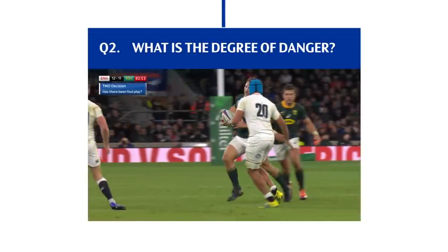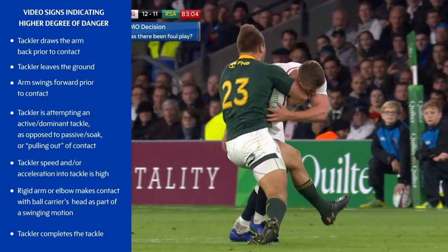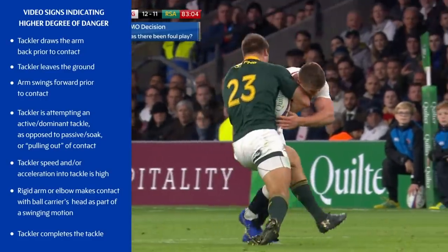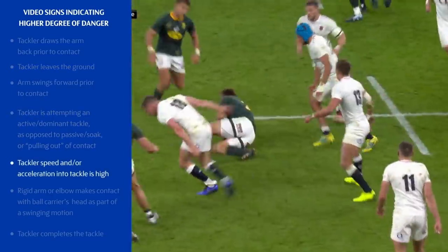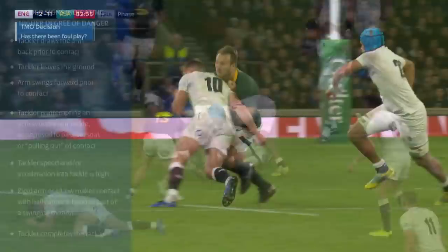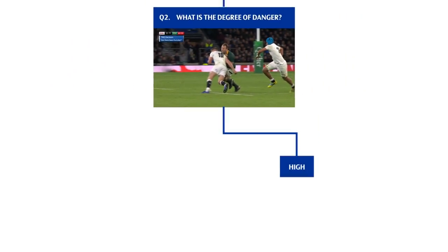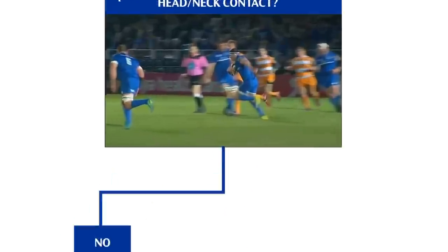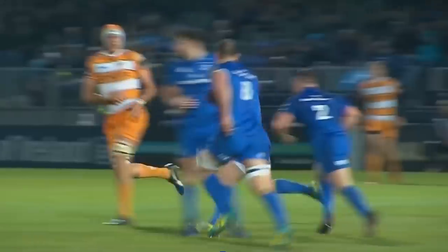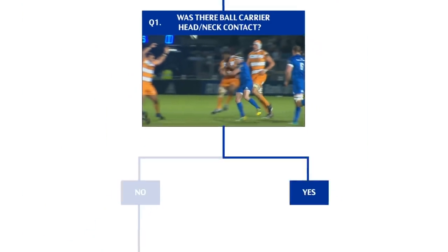Next, the officials must determine the degree of danger. In this example, there is a high degree of danger indicated by the tackler leaving the ground, a dominant tackle attempt, and both players at high speed. A high degree of danger without head or neck contact means the initial decision would be a yellow card. If the officials decide the degree of danger is low, the initial decision would be a penalty. In our other shoulder charge example, the degree of danger is automatically assumed to be high because contact is direct to the tackled player's head, so the initial decision would be a red card.